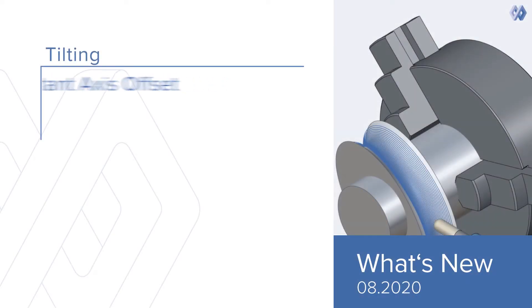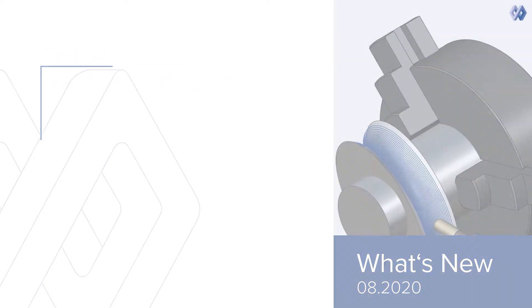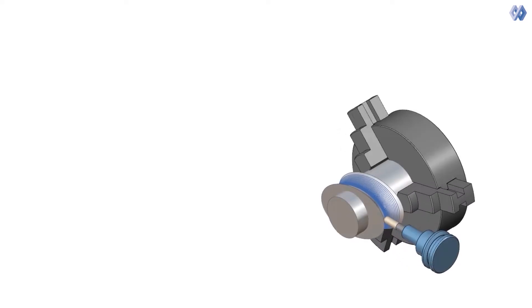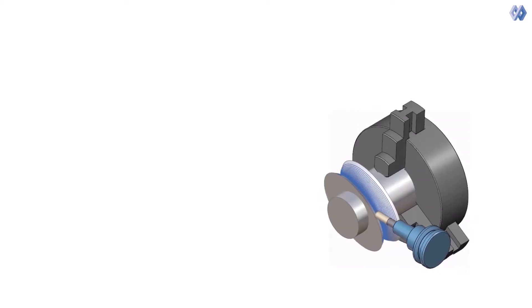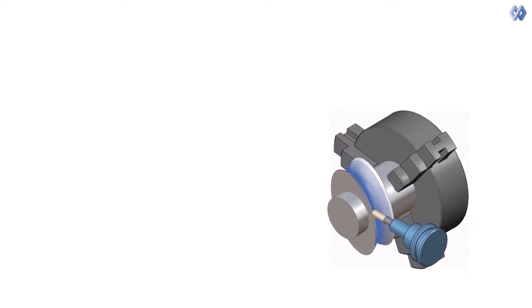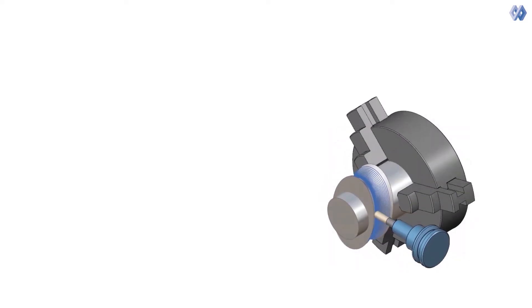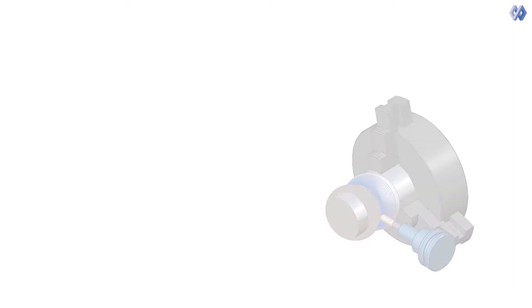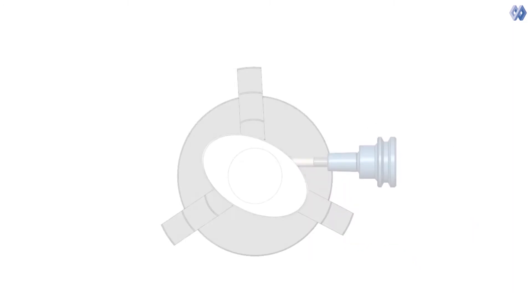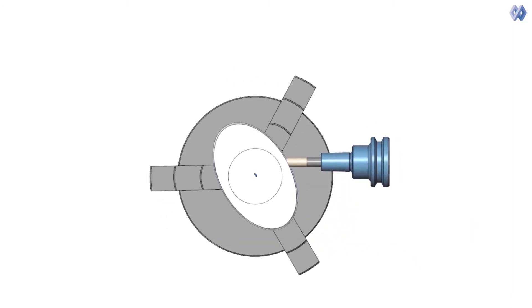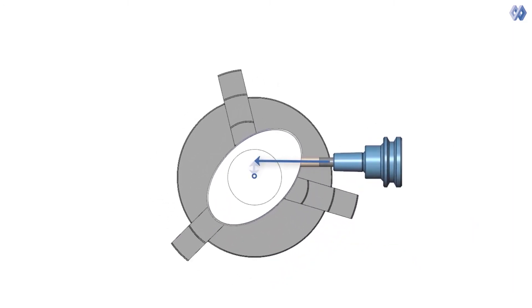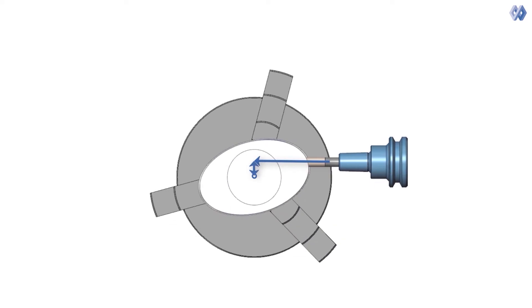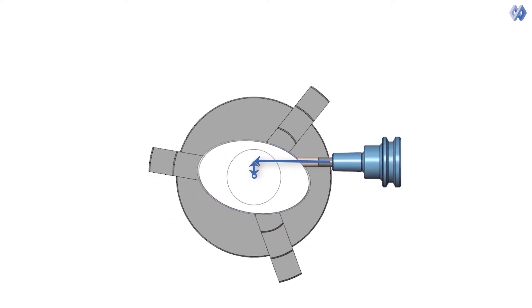Constant axis offset. A new feature has been added to rotary axis functions in surface-based and geodesic machining. This new option allows us to apply a constant offset between the tool axis and the rotary axis.